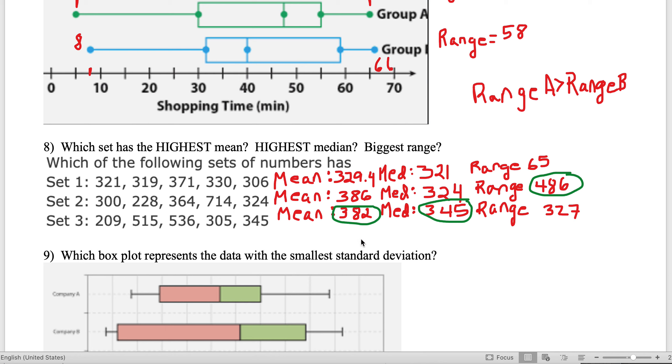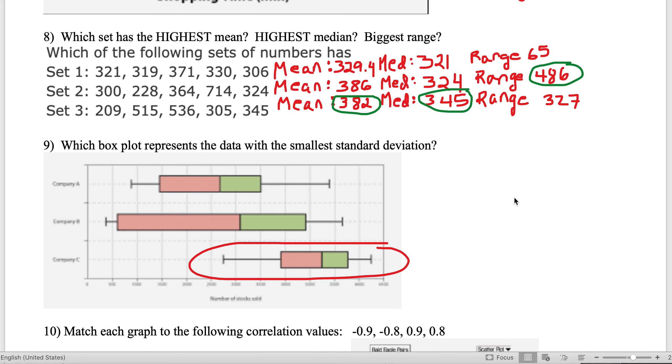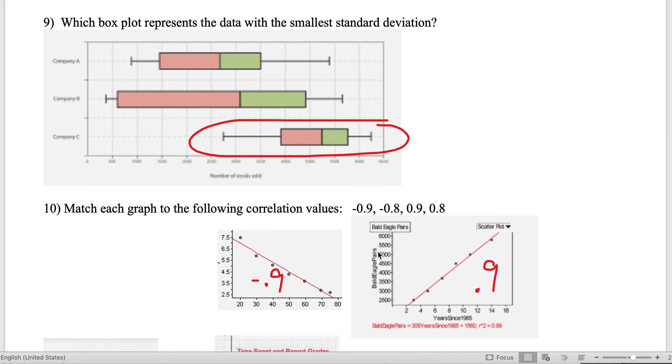All the scores in set one divided by five get the mean for set one, and so on. I find the median—order them first, find the one in the middle. Then I find the range: highest minus lowest. Set three had the highest mean, set three had the highest median, set two had the highest range.